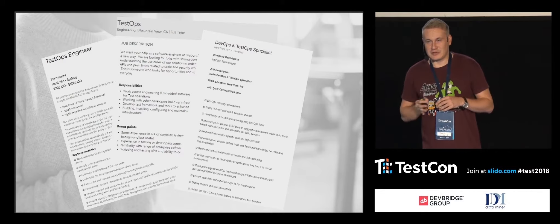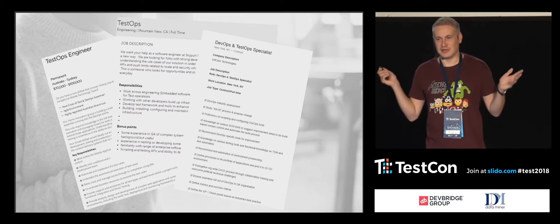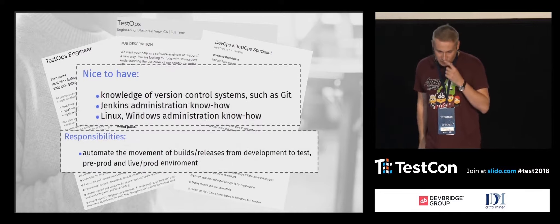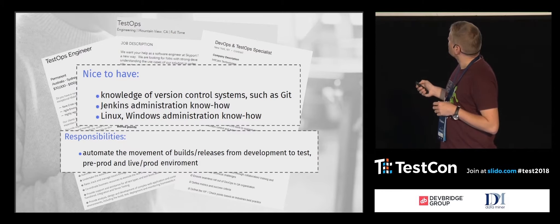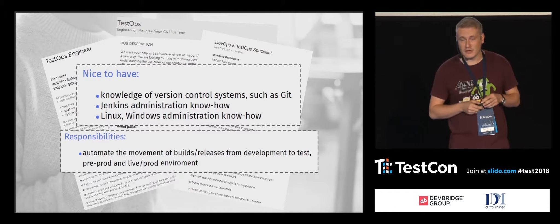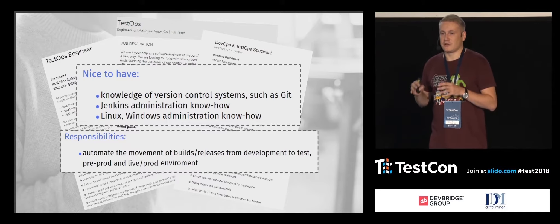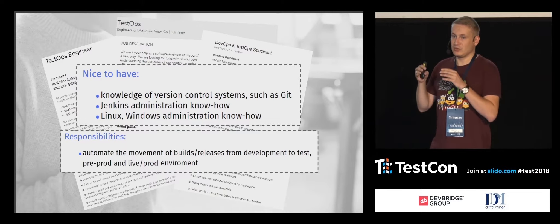I started looking deeper into whether TestOps is just my imagination, or if there are such terms around the world. I found some job offers around the world — I posted the more interesting ones here. The salary is in every one of them, so that's good. And I even created my own some time ago. Skills like Jenkins knowledge or continuous integration and deployment are not the typical subset of QA skills — they're more DevOps or developer skills. But why not put them as skills of a tester?